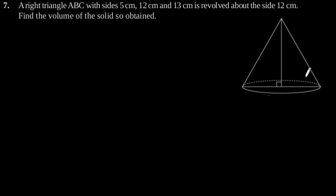Suppose this is our right angle triangle ABC. Now as given in the question, this right angle triangle is revolved about the side 12 cm.